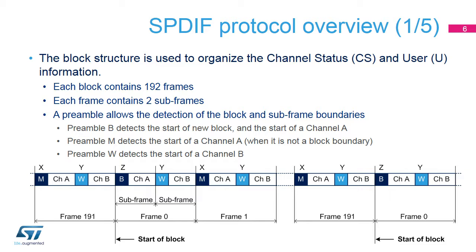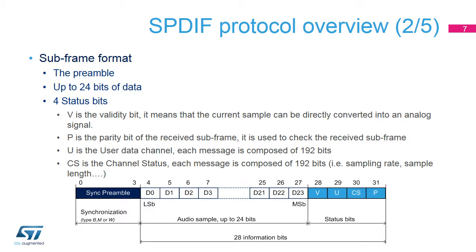Each frame contains two subframes. The SPDIF-RX is able to recognize the start of block, the preambles, and the frame boundaries. An SPDIF frame contains two subframes; each subframe contains 32 bits, divided into three fields: a synchronization preamble allowing the detection of block and subframe boundaries, a payload of 24 bits, and status bits V, U, C, S, and P.